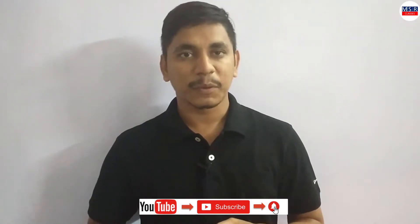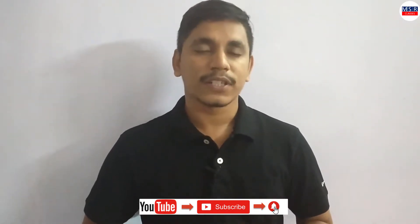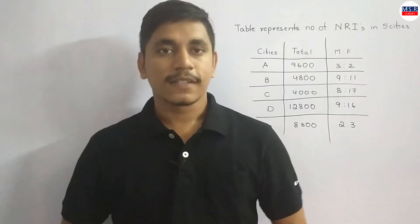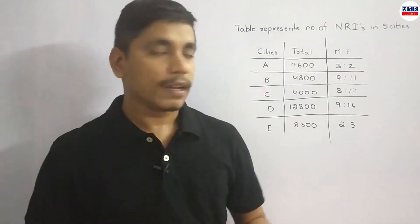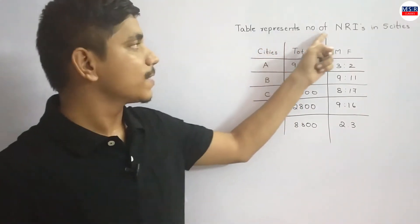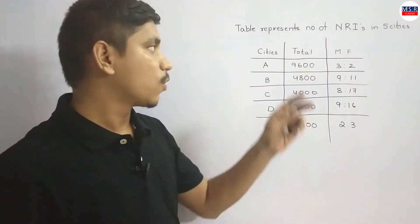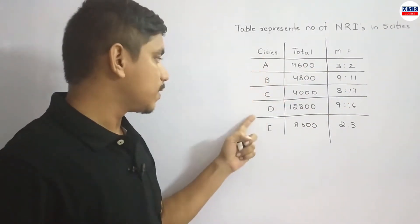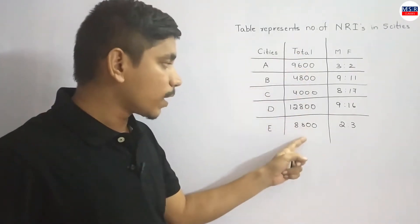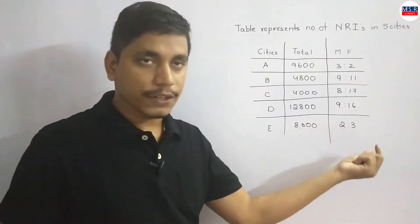Hi friends, welcome to my class. Here is the table of data interpretation we are going to solve. The table in front gives information about the number of NRIs in 5 cities: A, B, C, D, and E, along with their totals. The total number of NRIs is given, along with the male-to-female ratio for each city.